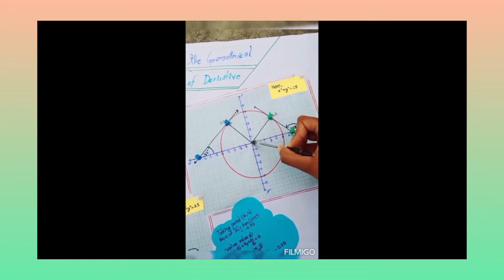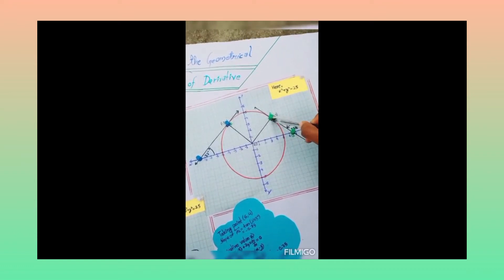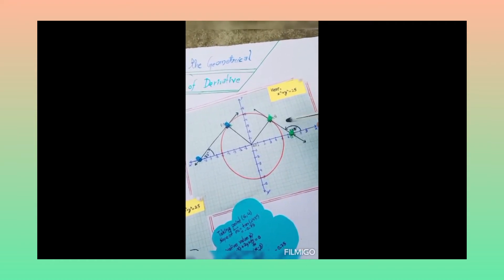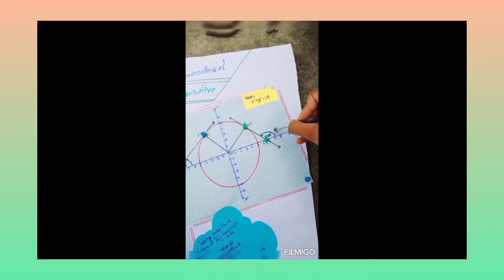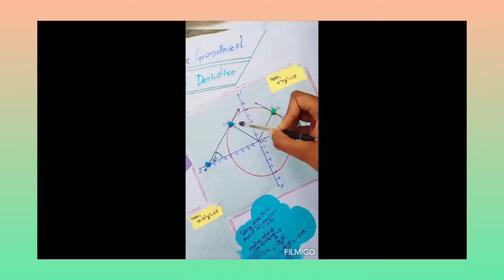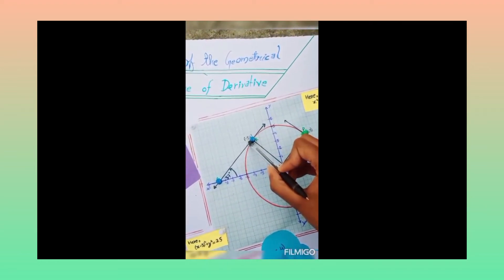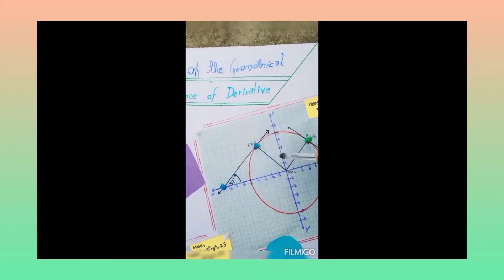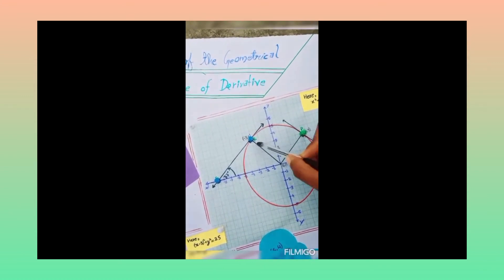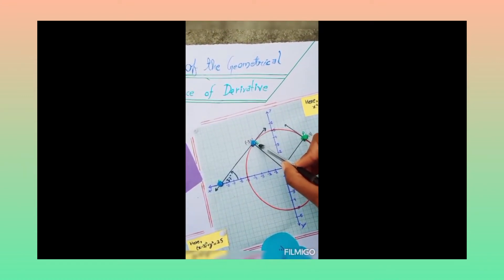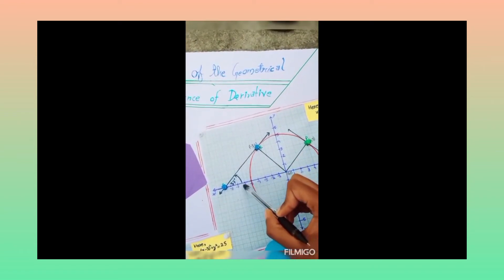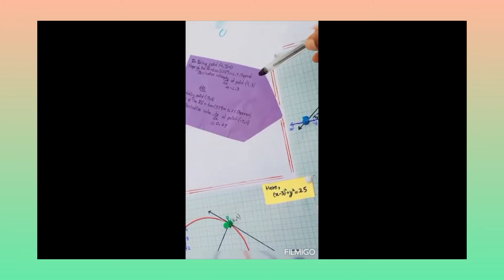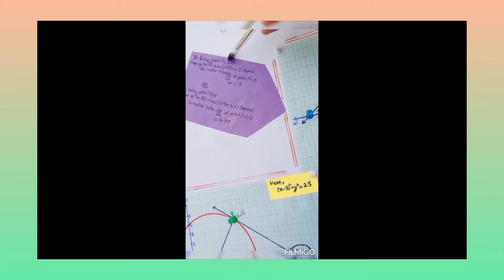Now join origin with point P and make tangent toward x axis. The angle of inclination is 128 degrees. Here we take second point minus 3,4. We join this point to origin and make tangent from point R towards x axis.